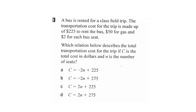Now we'll go through some examples involving direct and partial variation. In our first example: a bus is rented for a class field trip. The transportation cost is made up of 225 dollars to rent the bus, 50 dollars for gas, and 2 dollars for each bus seat. Which equation describes the total cost C if n is the number of seats? One strategy is to cover the answer choices and solve it yourself first.